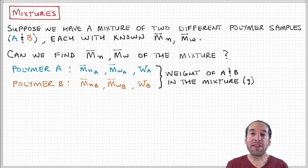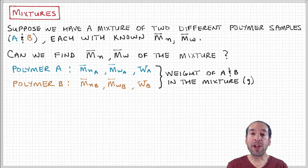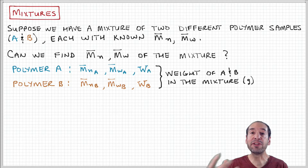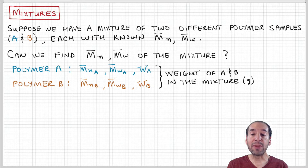So if we have a mixture of two different samples that each has its own distribution of chain lengths, where we know the molecular weight averages for those distributions, can we then find the number and weight average molecular weight of the mixture if we combine samples A and B together to form a new distribution of chain lengths? We don't actually know the distribution of chain lengths in each sample — we only know the average molecular weights, the number and weight averages of each.